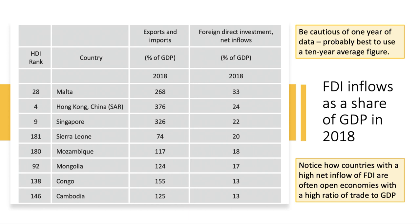Inward FDI of course can come into any country — both developed and developing. These are the countries with the highest investment flows as a share of their GDP in 2018. Malta, Hong Kong, and Singapore are rich advanced countries, but notice Sierra Leone, Mozambique, Mongolia, Congo, and Cambodia all achieved inflows of investment of more than 10% of their GDP in 2018.